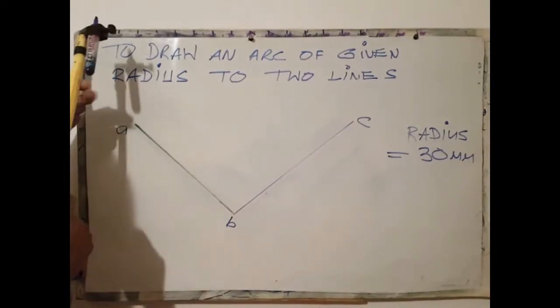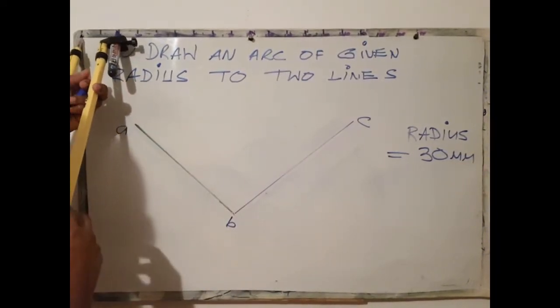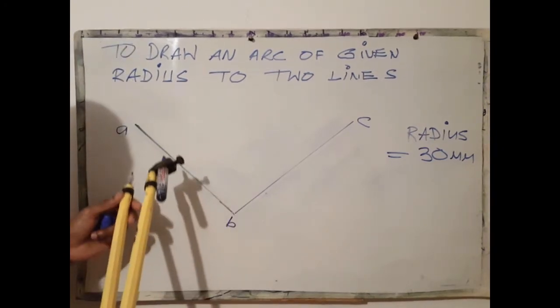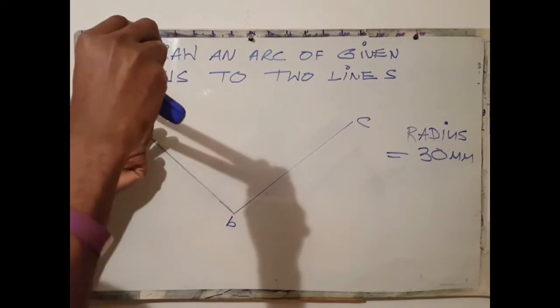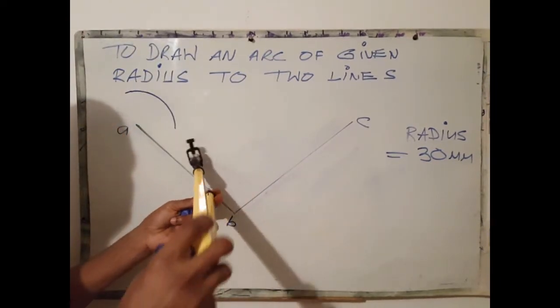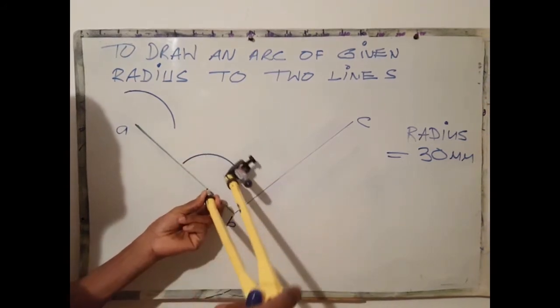The first step is to open your compass to 30 mm. And at any two points on line AB, which is my starting point, first arc, second arc.